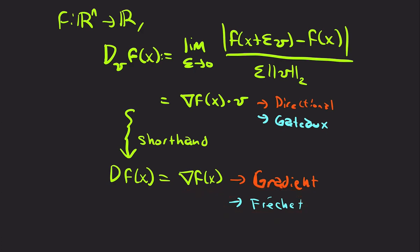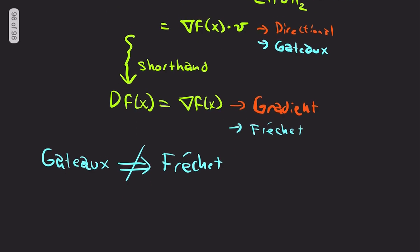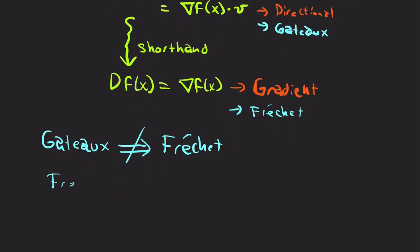Recall that Gâteaux does not imply Fréchet. The Fréchet derivative in finite dimensions will be equal to the gradient, and the Gâteaux derivative will be equal to the directional derivative in finite dimensions. Fréchet, Gâteaux differentiable in all directions, does not imply Fréchet, but Fréchet differentiable does imply the Gâteaux derivative.